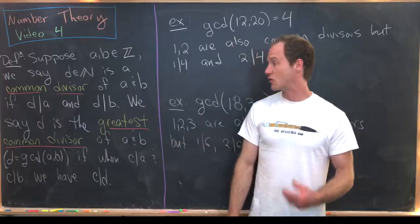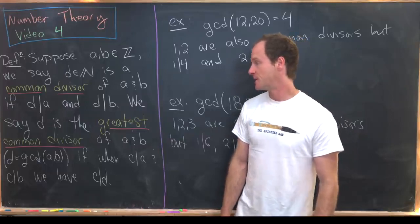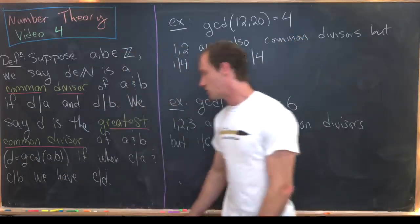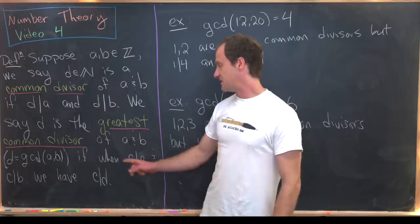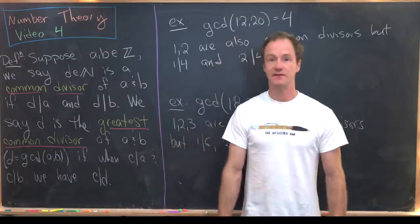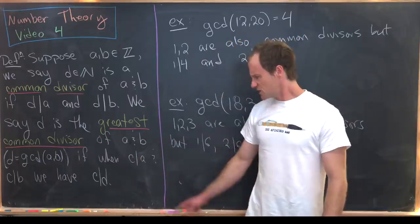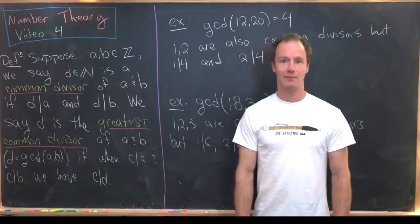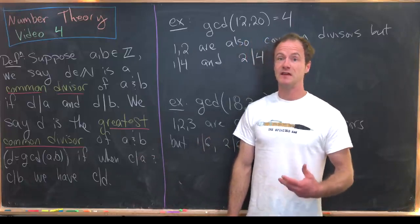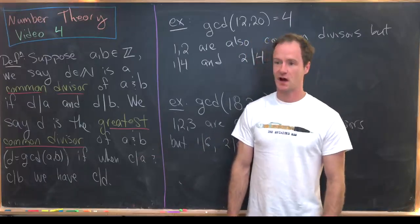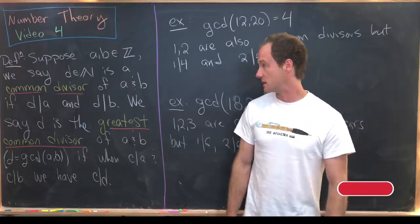Furthermore, we say that D is the greatest common divisor of A and B, and we'll write D equals GCD(A,B), if when C divides A and C divides B, we know that C divides D. So in other words, if we've got another common divisor C, C must divide that greatest common divisor. So our ordering here is by divisibility.